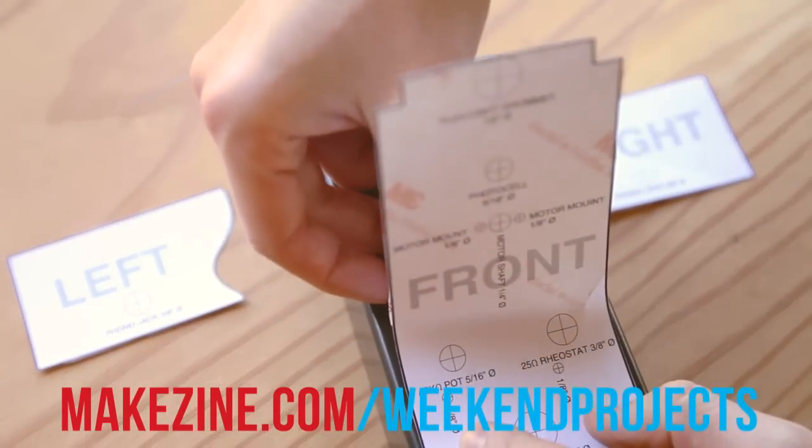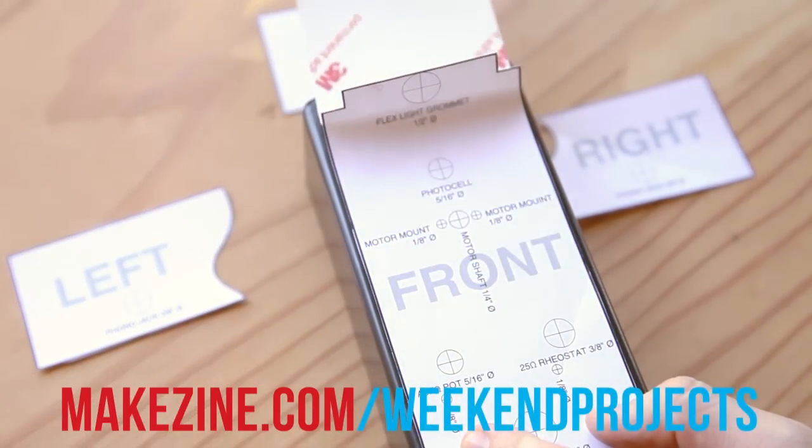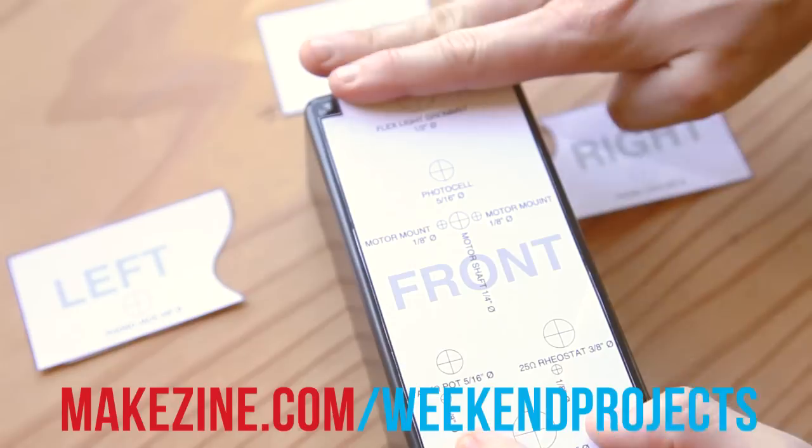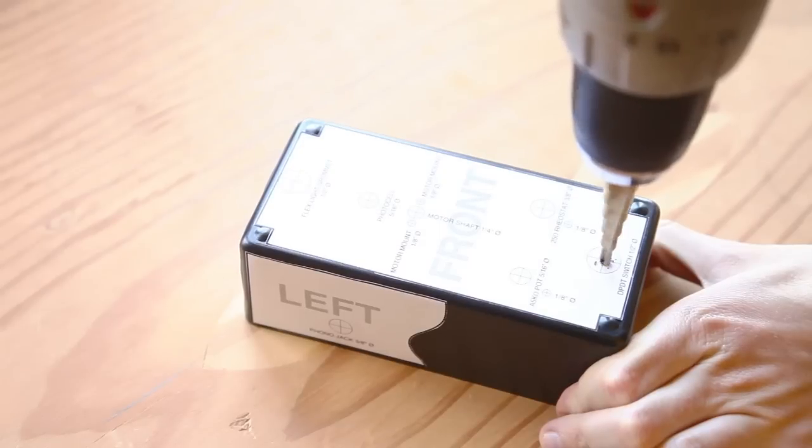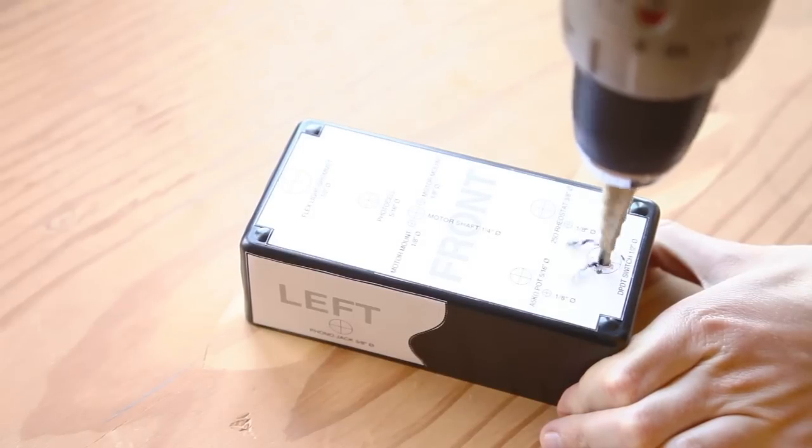First, drill the enclosure box to make the mounting holes for the components. Just download and print the templates from the weekend projects page, then stick them to your project box. Drill the holes where indicated, then peel off your templates and toss them.